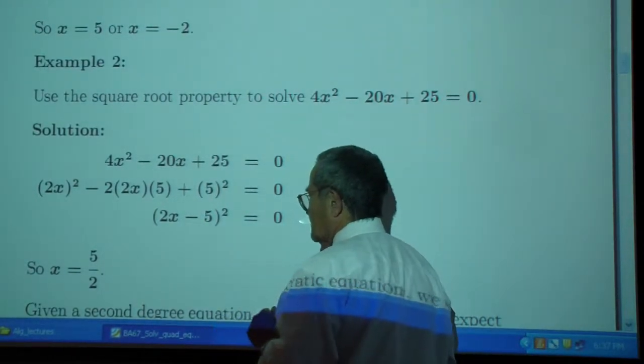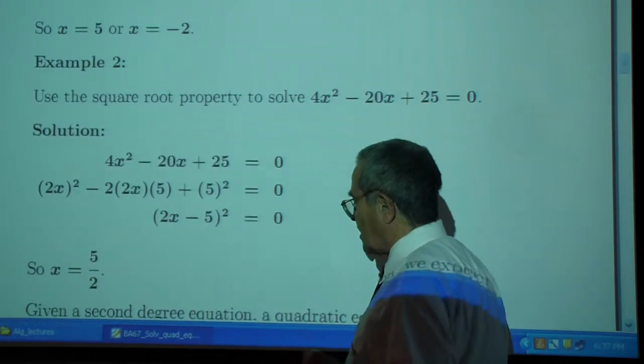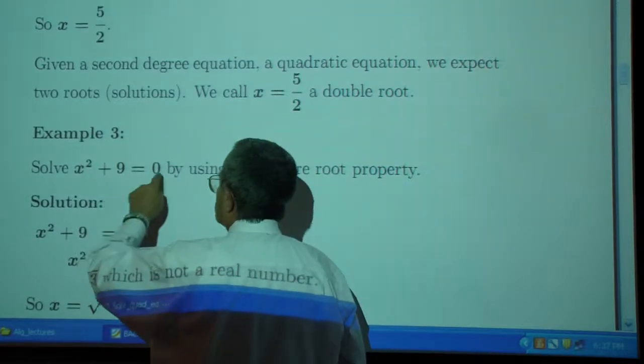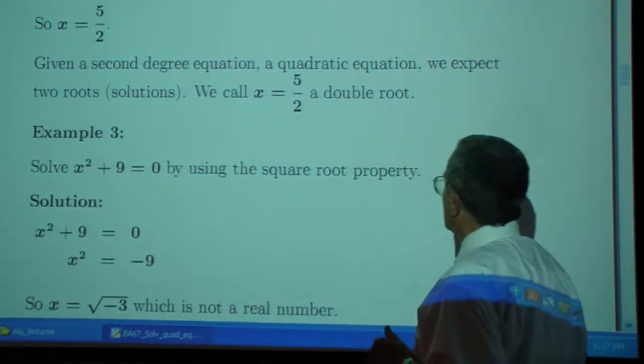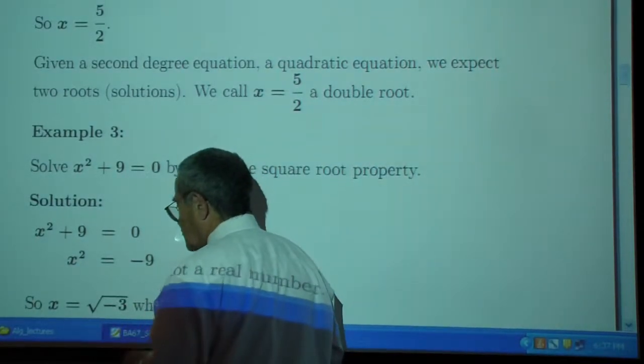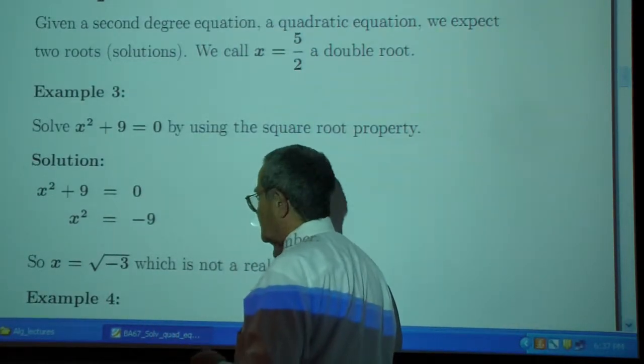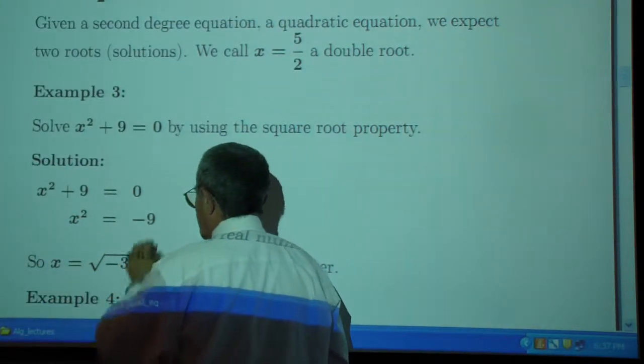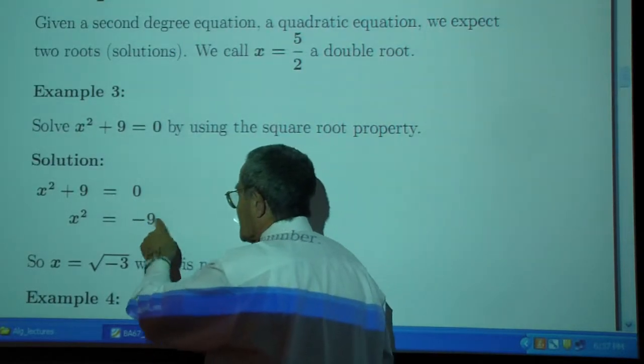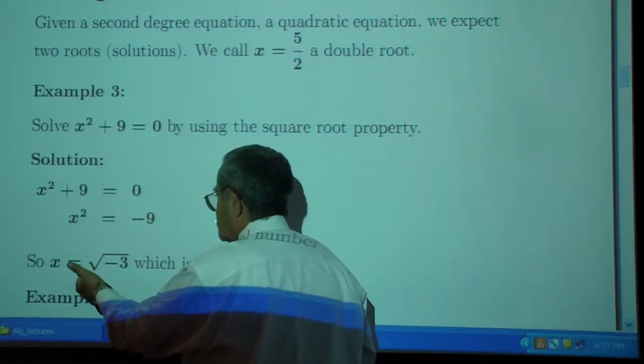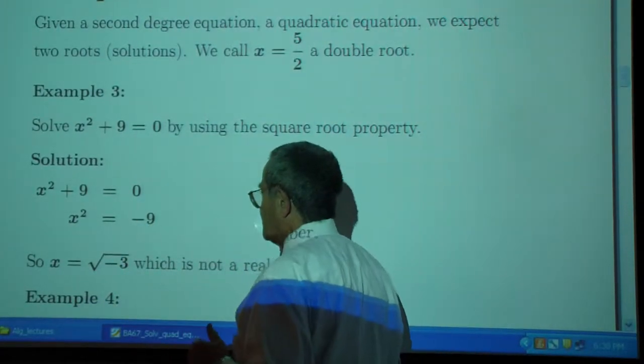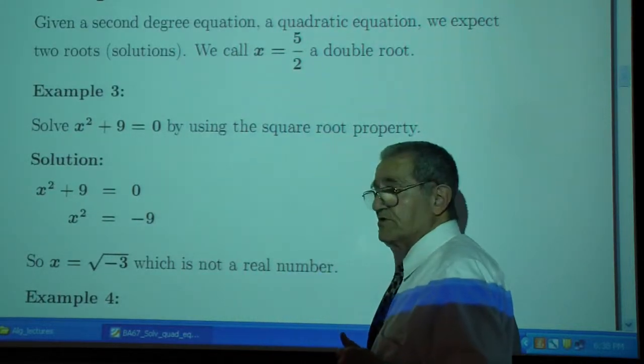I'm showing you the square root property. You may not quite catch on what it means yet. Here, if you have x squared plus 9, which is 0, you subtract 9 from both sides. You take the square root of both sides. That's the square root property. So you get the square root of x squared, which is x. The square root of negative 9, which is not negative 3,